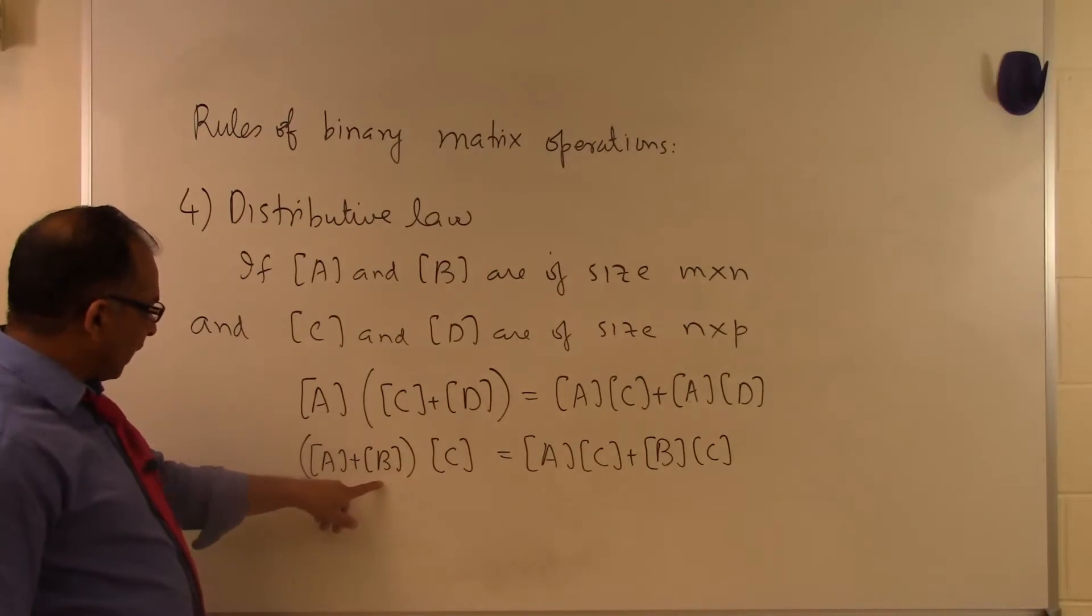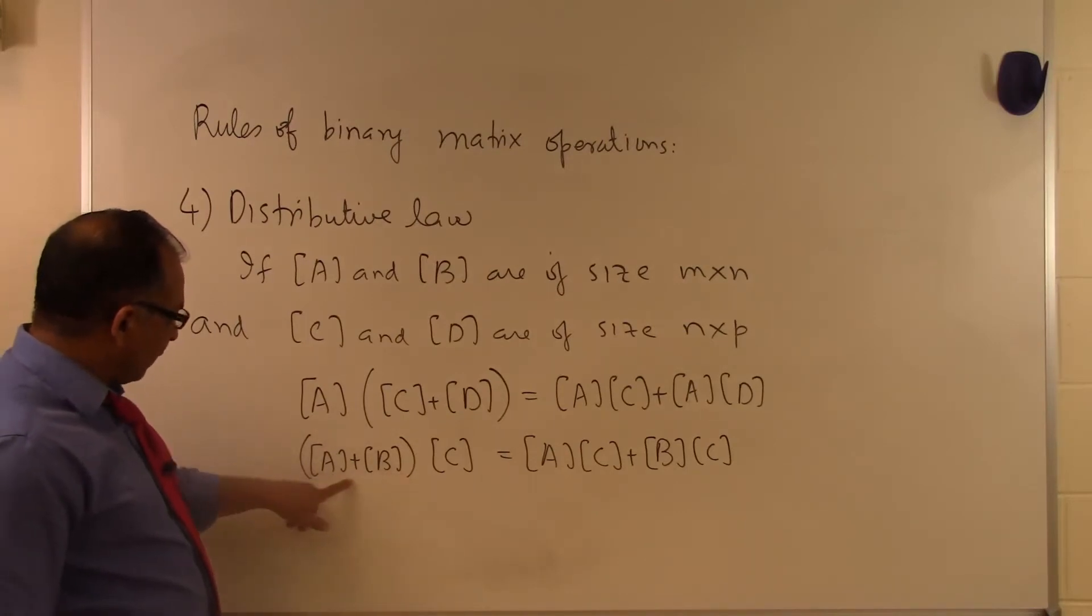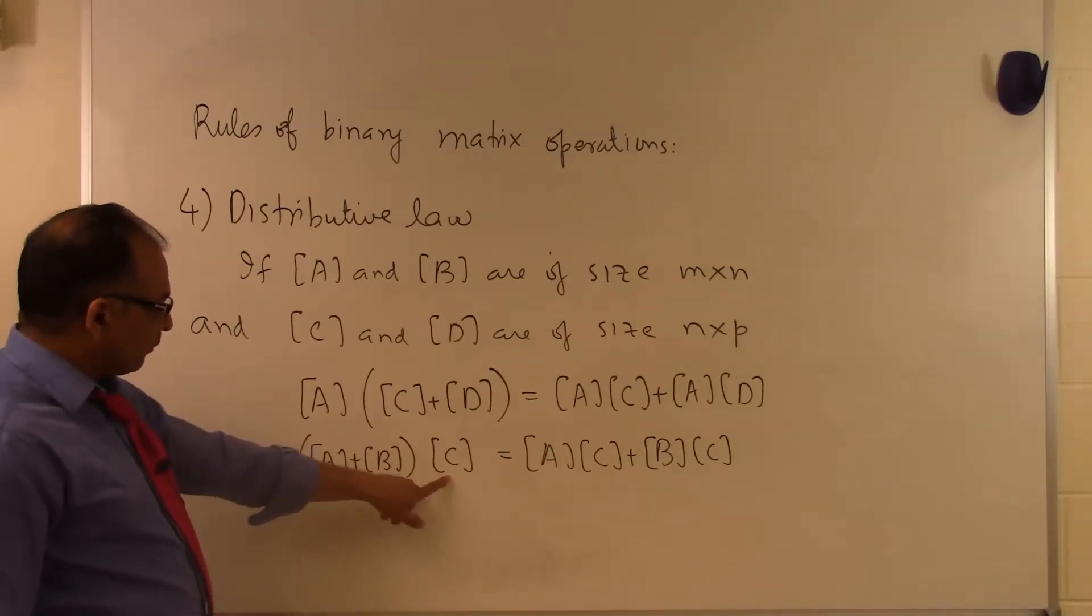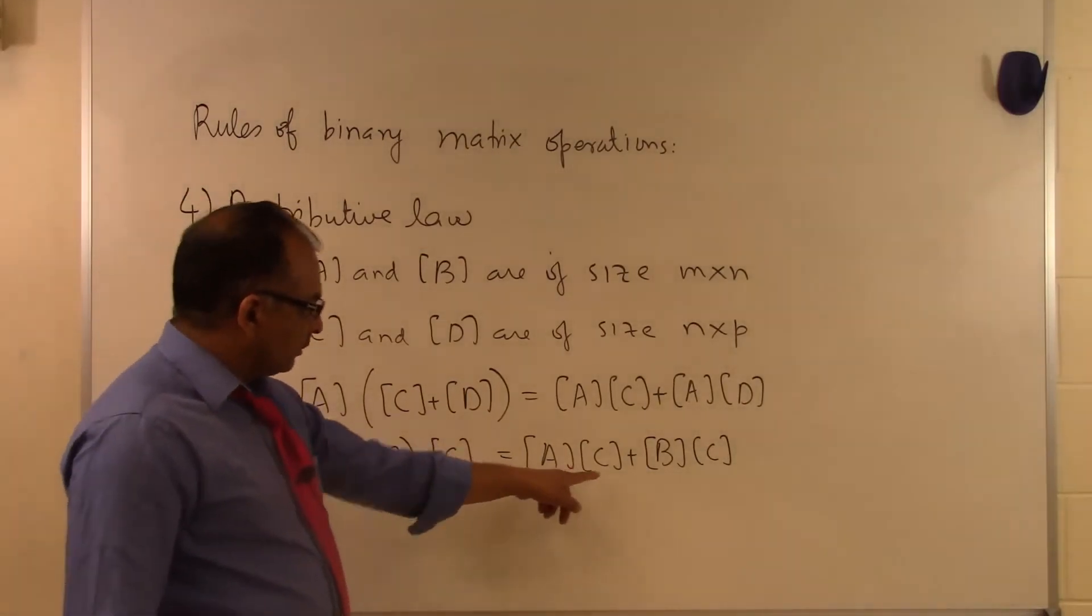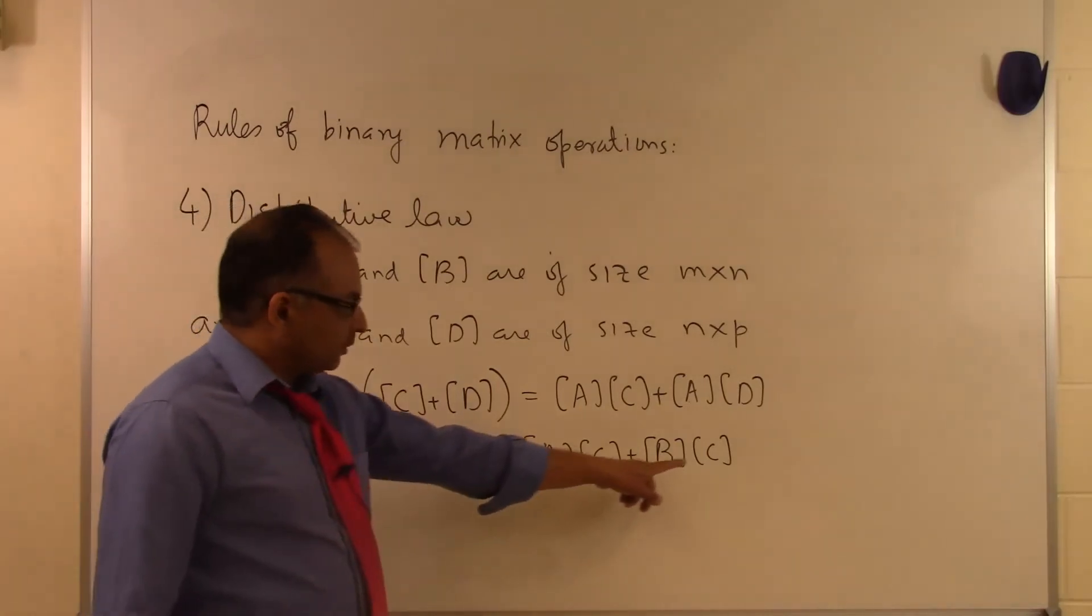So the other side of the coin is that if I take two matrices, add them together, then multiply by C, that will be the same as multiplying A by C plus B times C here.